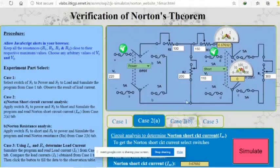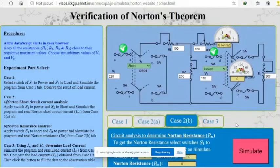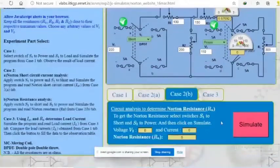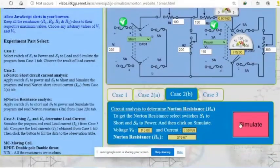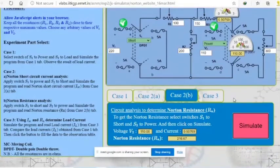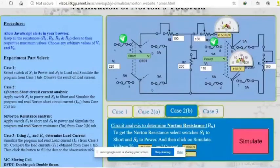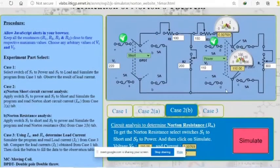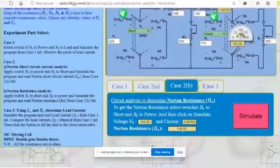Now at the second case part 2, we will replace S1 with short circuit and S2 with power. Now we will be able to find Norton's resistance, current and voltage V2. Voltage V2 is 100, current is 0.50 and Norton's resistance here is 216.67.